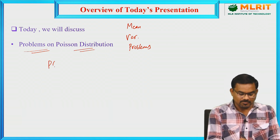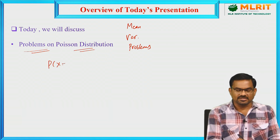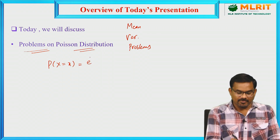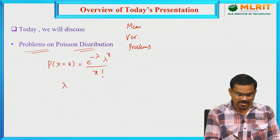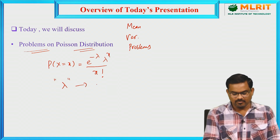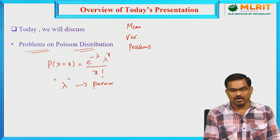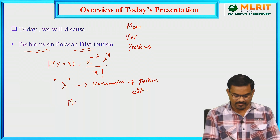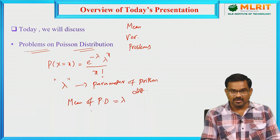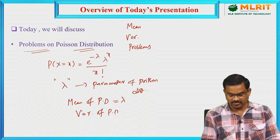In Poisson Distribution, the probability of x successes is given by e^(−λ) · λ^x / x!. Here, λ is the parameter of Poisson Distribution. The mean of Poisson Distribution is λ and the variance of Poisson Distribution is also λ.